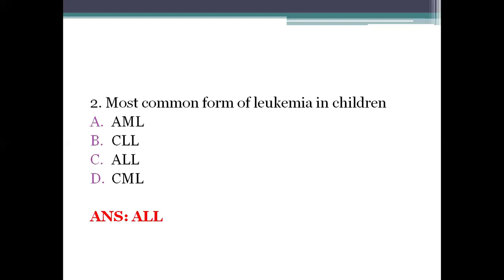ALL is the most common form of leukemia seen in children between 2 to 4 years. 80% of leukemias in children are ALL. The second most common is AML at 15 to 20% of cases, and CML at around 2% of cases. In ALL, the bone marrow creates too many lymphoblasts, which are immature white blood cells.